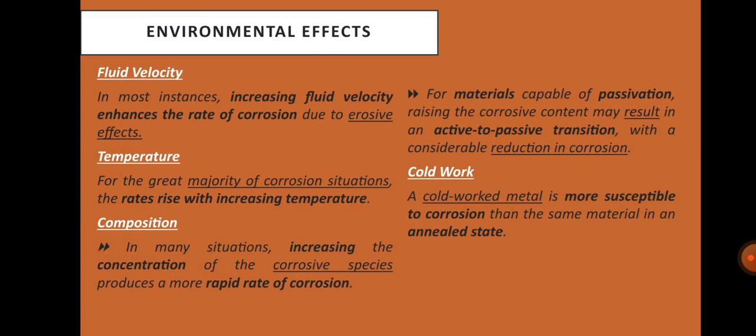Fluid velocity: in most instances, increasing fluid velocity enhances the rate of corrosion due to erosive effects. Temperature: for the great majority of corrosion situations, the rates rise with increasing temperature. Composition: in many situations, increasing the concentration of the corrosive species produces a more rapid rate of corrosion. For materials capable of passivation, raising the corrosive content may result in an active-to-passive transition with a considerable reduction in corrosion. Cold work: a cold-worked metal is more susceptible to corrosion than the same material in an annealed state.